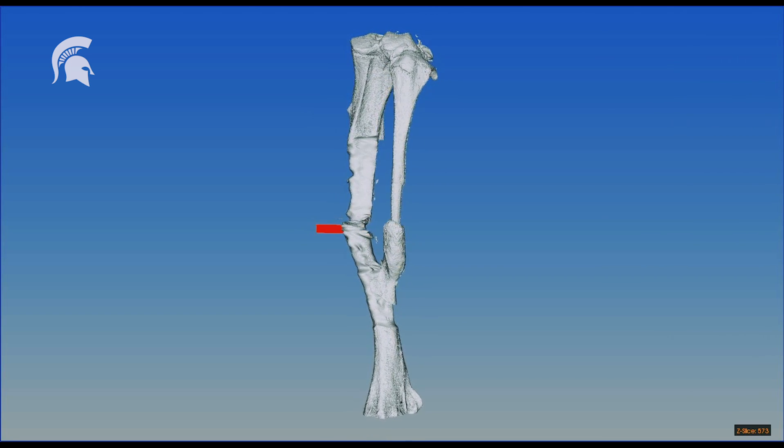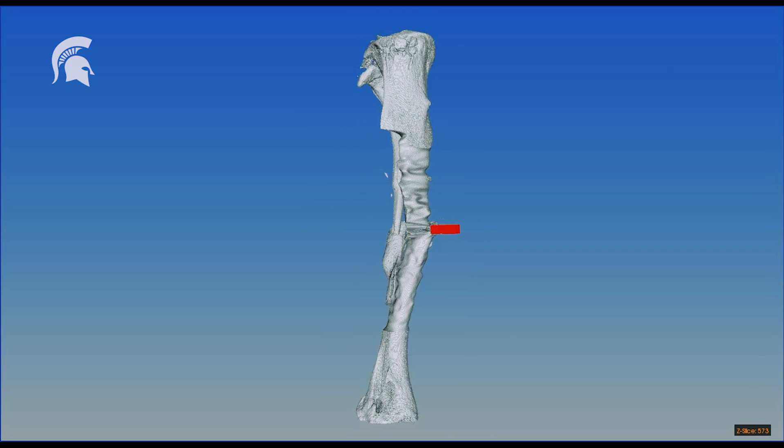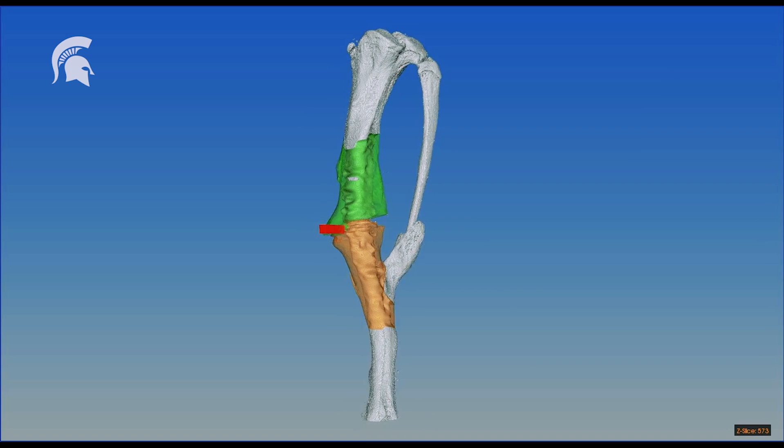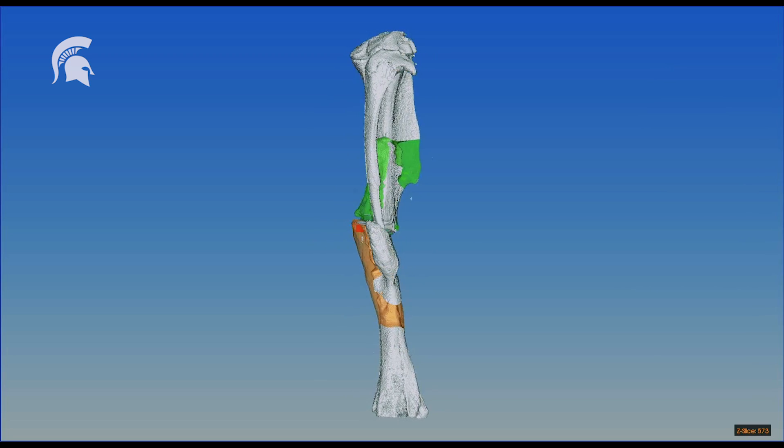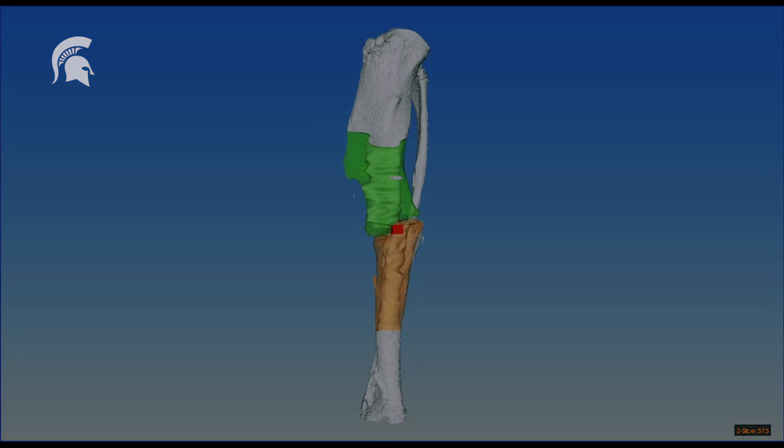If we look at a nonunion situation, the red arrow is highlighting a gap where the bone hasn't healed, and callus is formed both above and below the fracture line, highlighted in green and orange specifically, but that bone is not healed.